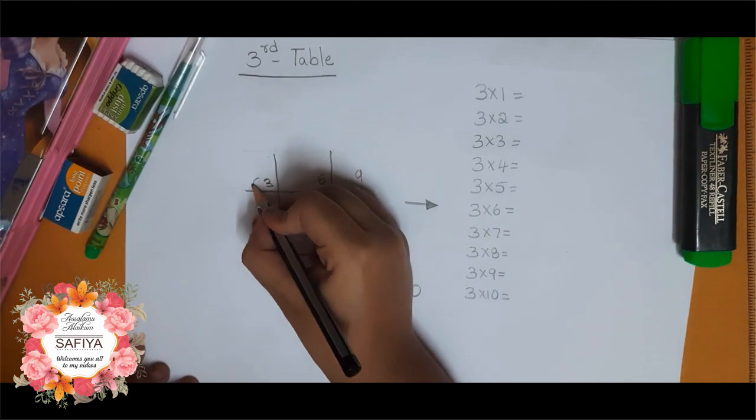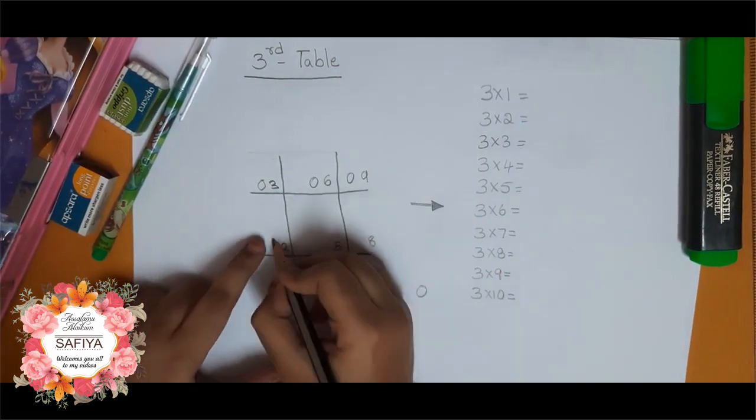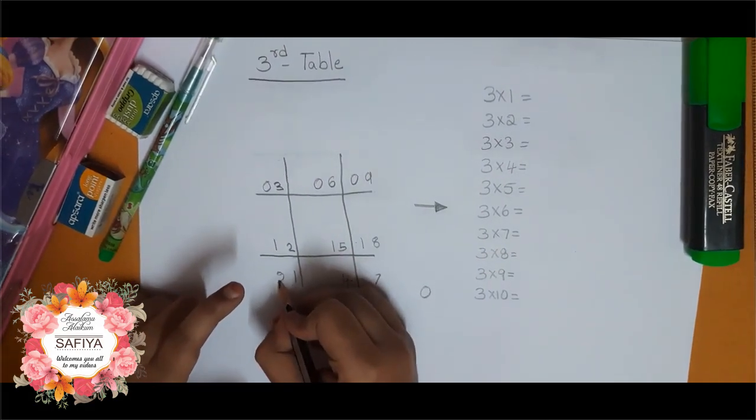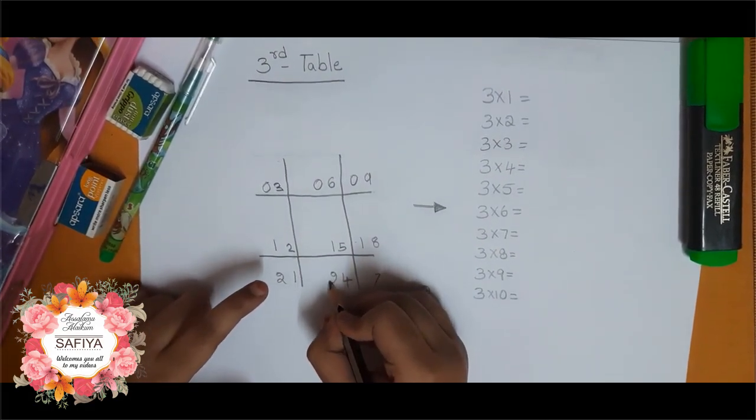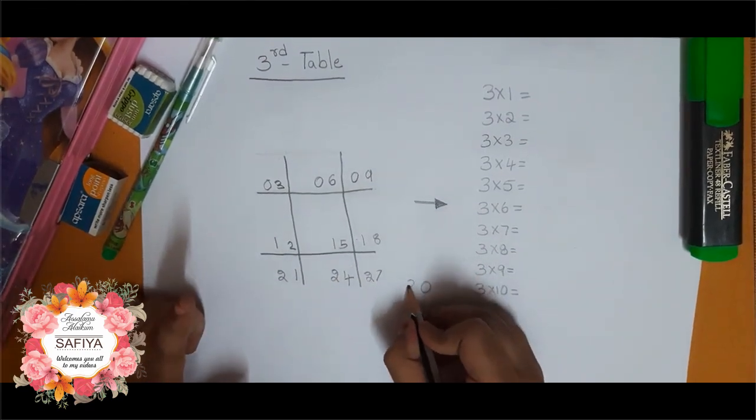Now start. 0, continue 2 times. 1, continue 2 times. 2, continue 2 times. And 2 after 3. So 3.